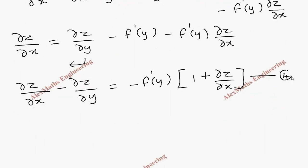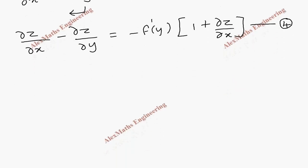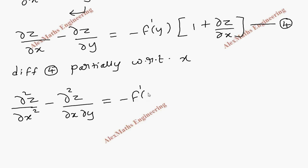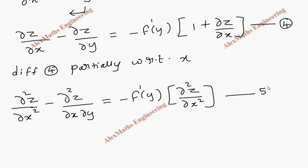Now we are going to differentiate the fourth expression partially with respect to x. So we get dou square z by dou x square minus dou square z by dou x dou y, and the right-hand side constant term stays as it is and its derivative gives dou square z by dou x square — the derivative of 1 is 0. Let's keep this as the fifth expression.